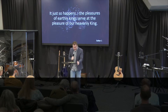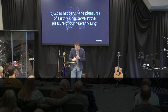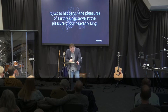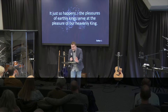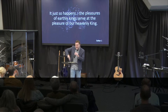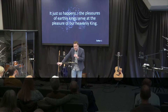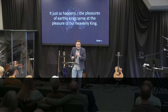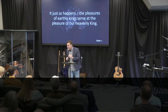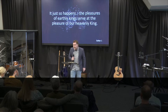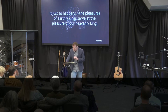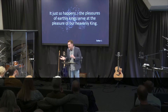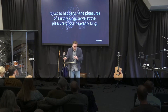It just so happens that the pleasure of earthly kings serves at the pleasure of our heavenly King, and his glory in all its splendor is temporary in nature. We see that implicitly in this text — God uses this man as his servant. It just so happens that this king throws this feast, and if I were to summarize verses 10 through the end of the chapter: Queen Vashti refuses to do what the king requests of her, and in her refusal there's an opening for Esther to be introduced into the story — an opening for the queen in preparation for the attempted annihilation of the Jewish people.